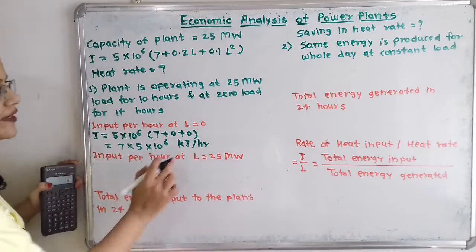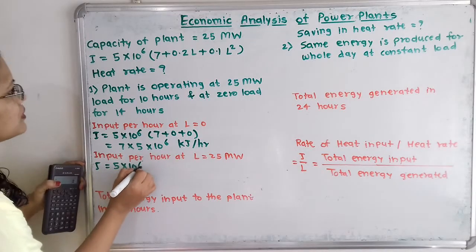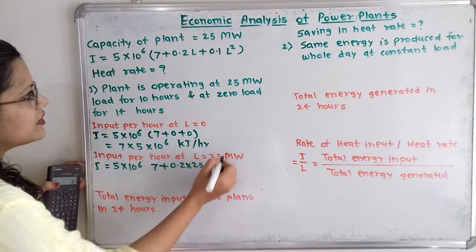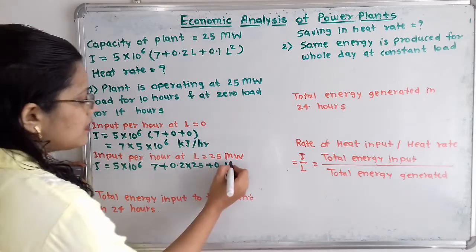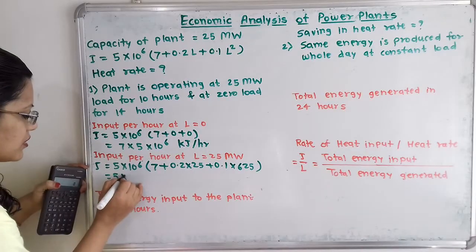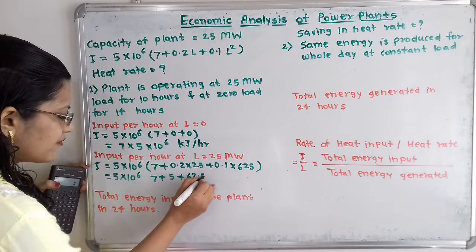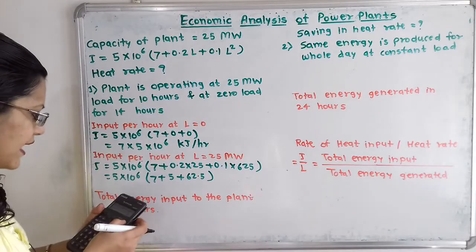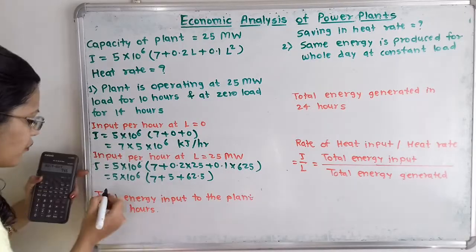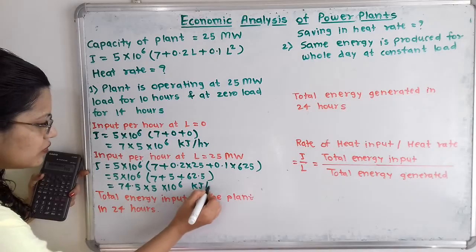Now we calculate the input per hour at L = 25. Substituting L = 25: I = 5 × 10^6 × (7 + 0.2×25 + 0.1×625) = 5 × 10^6 × (7 + 5 + 62.5) = 5 × 10^6 × 74.5, which gives 74.5 × 5 × 10^6 kilojoule per hour.